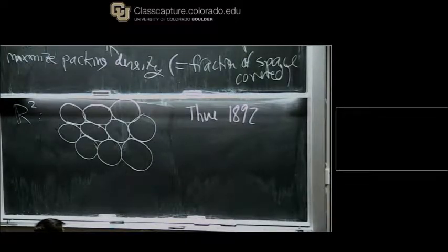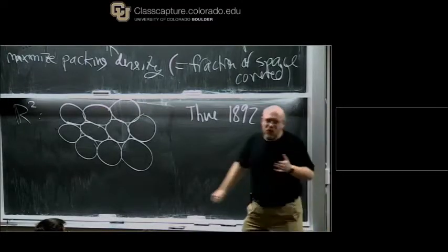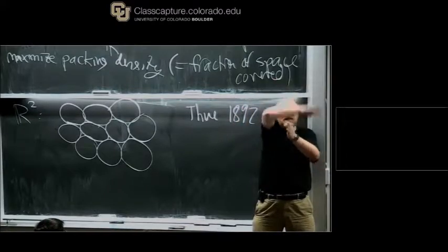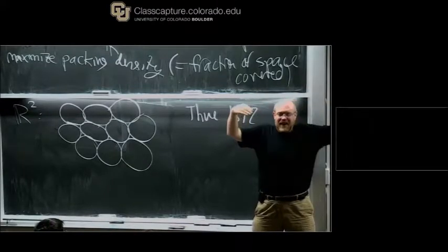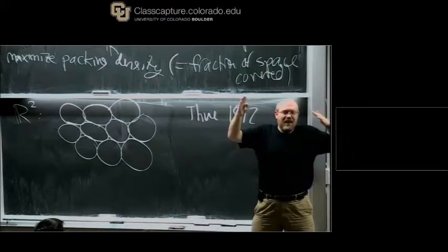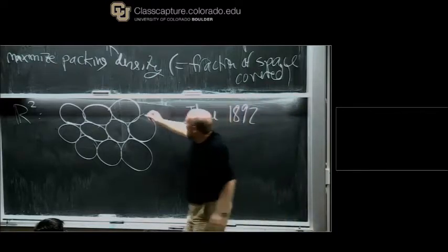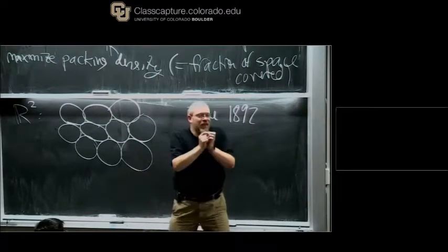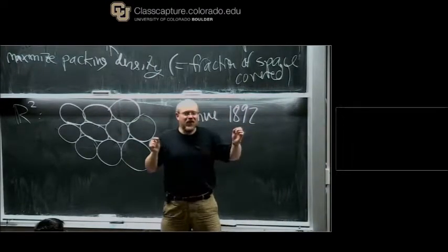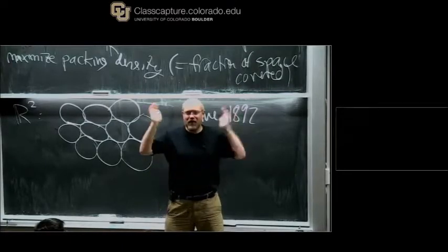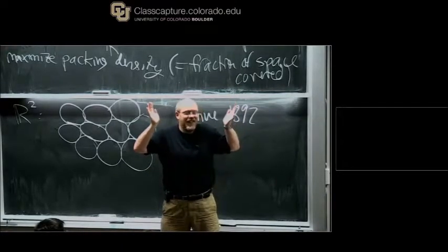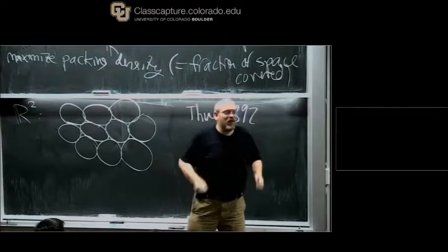What do I mean by spheres? In three dimensions, spheres are all points at a fixed distance from the center, and we do the same in any dimension. Two-dimensional spheres are disks, one-dimensional spheres are intervals, and four-dimensional spheres are a little hard to visualize but exist at least abstractly.